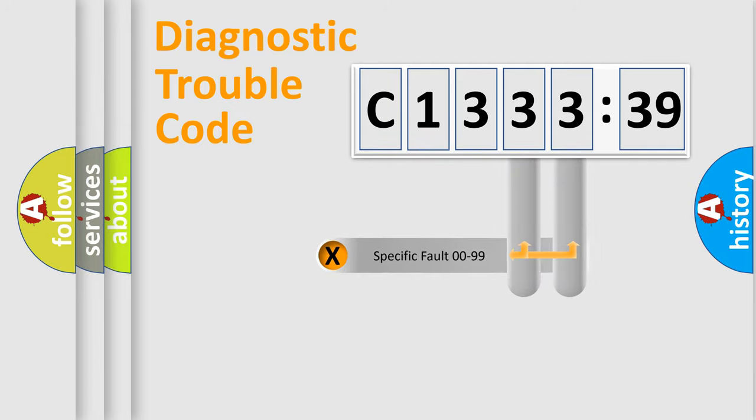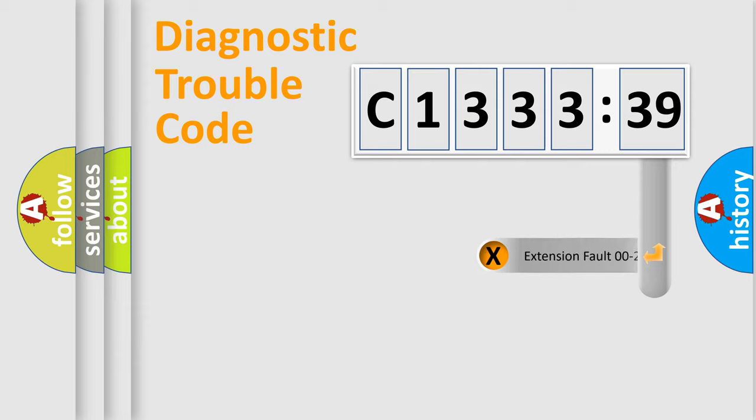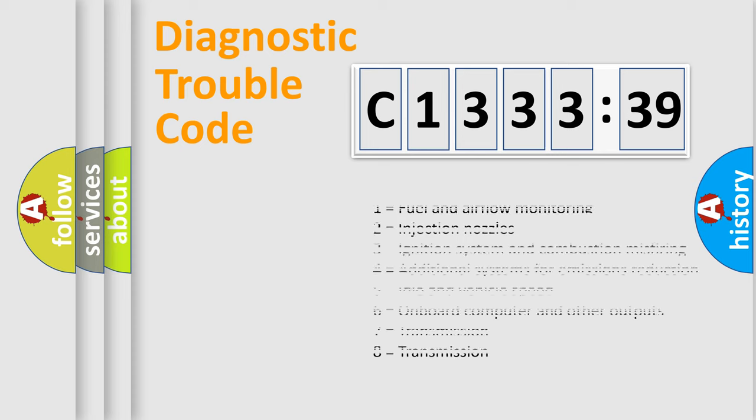The distribution shown is valid only for the standardized DTC code. Only the last two characters define the specific fault of the group. The add-on to the error code serves to specify the status in more detail.